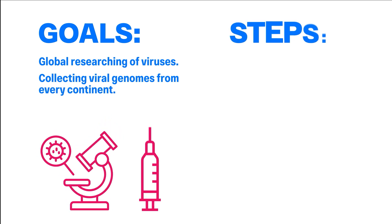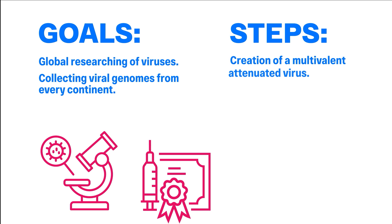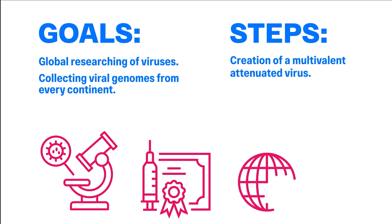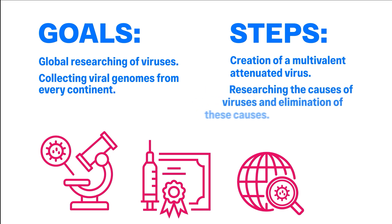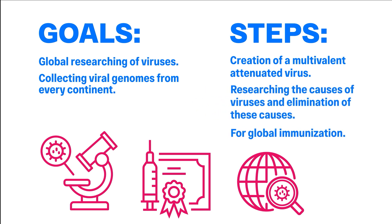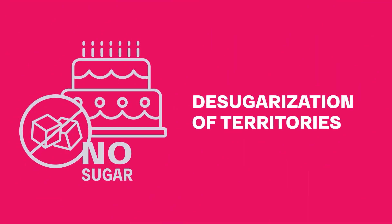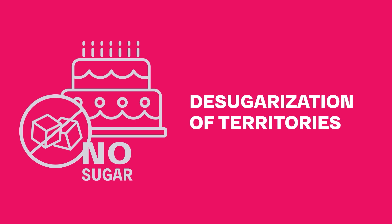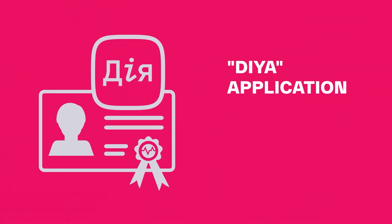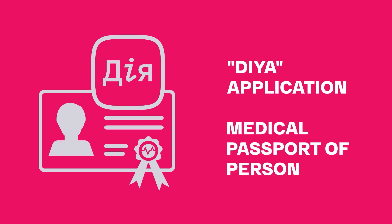Creation of a central hub for the development and production of vaccines. Goals: Organization of a common global virus research to eliminate human viral diseases. Steps: Collecting viral genomes from every continent with further analysis; creation of a multivalent attenuated virus containing dangerous antigens of natural viruses for mass immunization of mankind; researching the cause of viruses and elimination of these causes; global immunization; desugarization of territories; exclusion of sugar from all kinds of products. Ukraine implements a mobile application Dia which includes a person's medical passport.